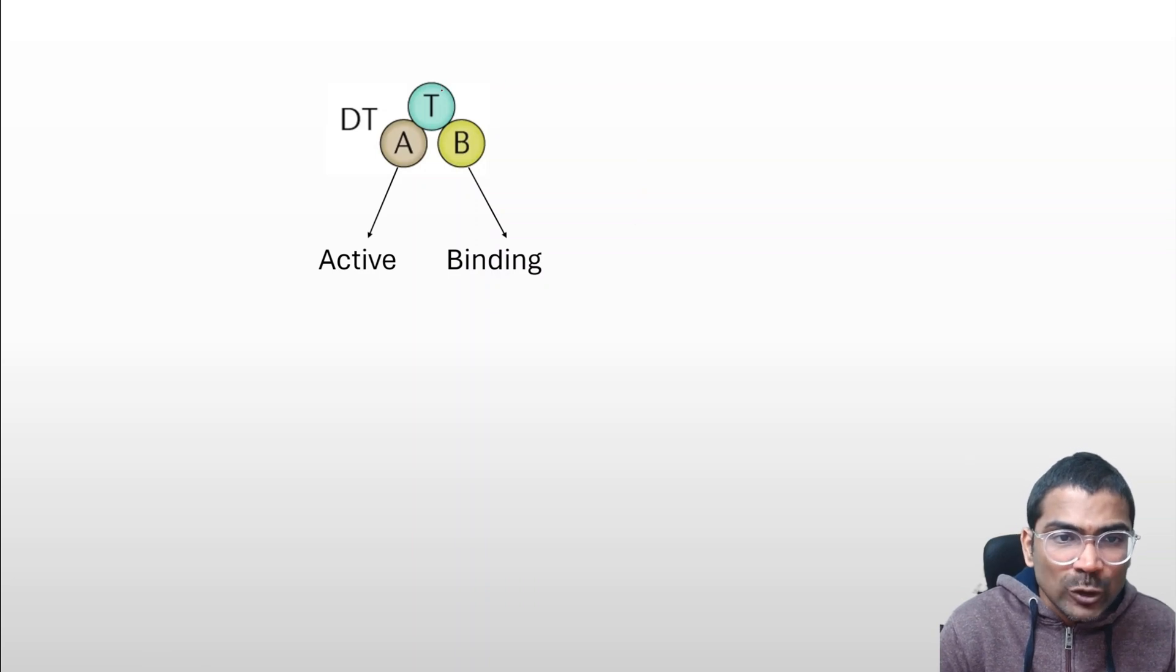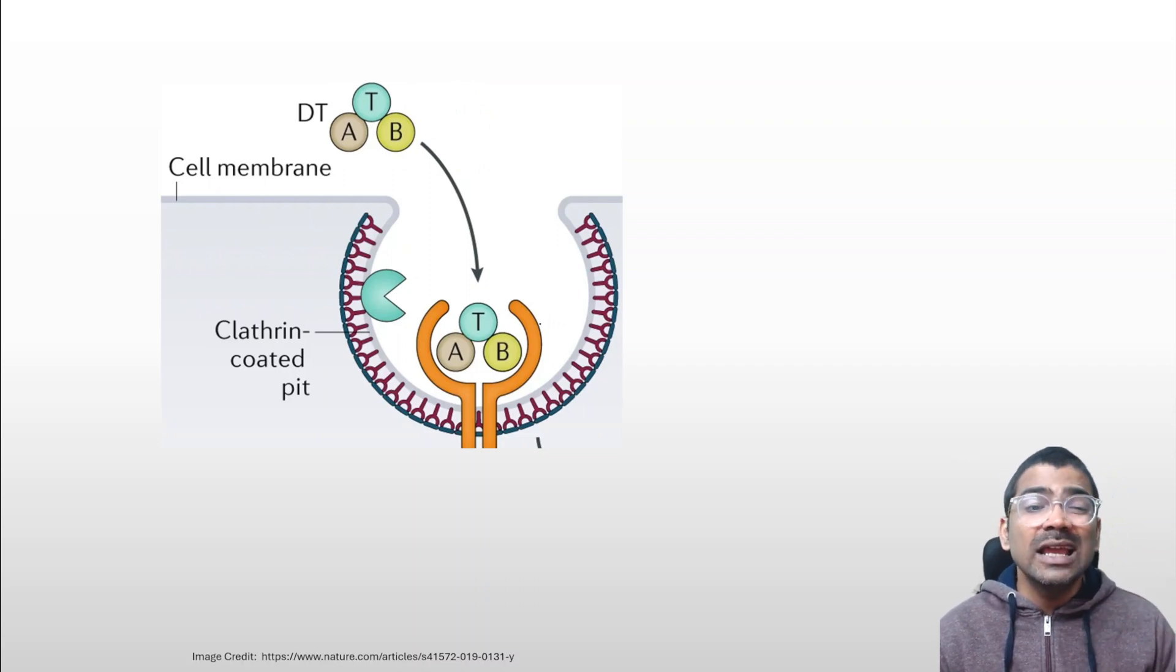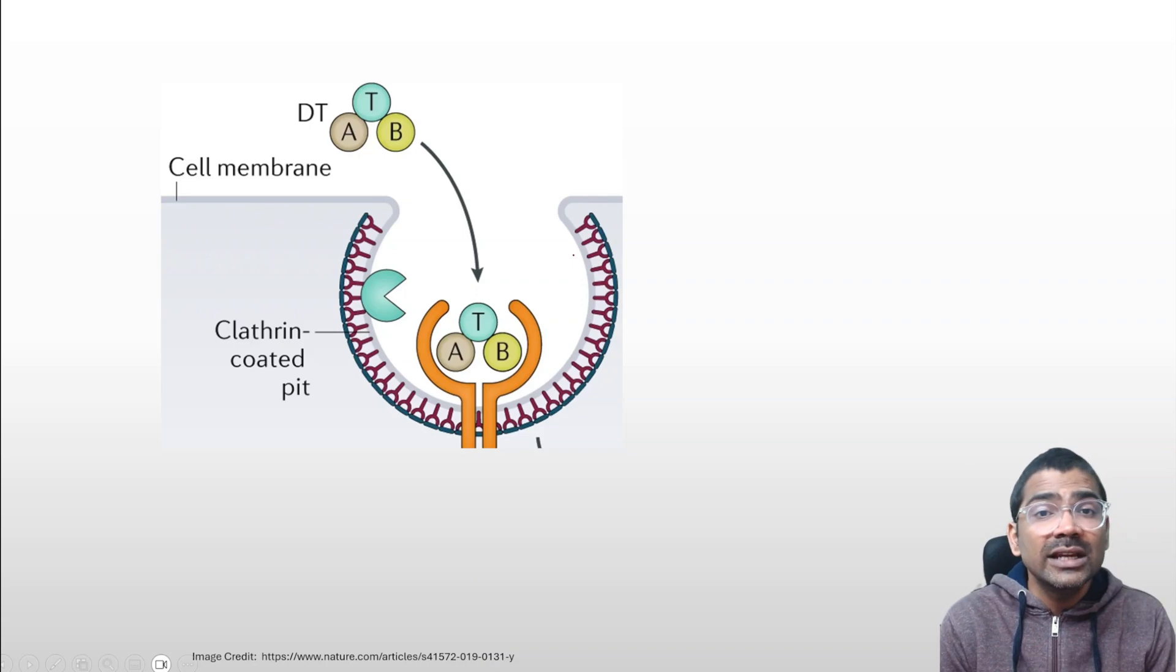The T domain is part of the B subunit. Diphtheria toxin enters the cell via receptor-mediated endocytosis through clathrin-coated pits.